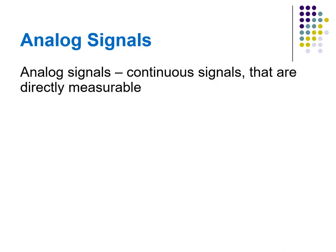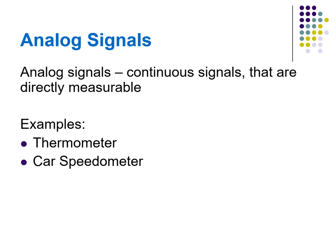Analog signals are continuous signals that are directly measurable. Examples: a thermometer — the level of mercury rises with the temperature; a car speedometer — the needle swings farther right as you accelerate; and a stereo — the volume increases as you turn the knob.